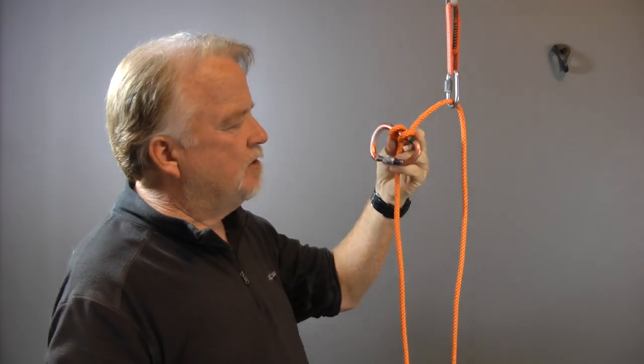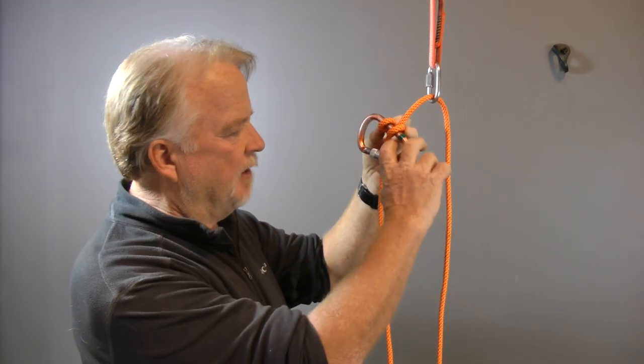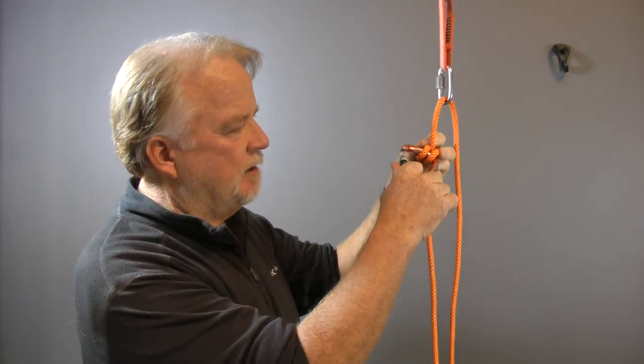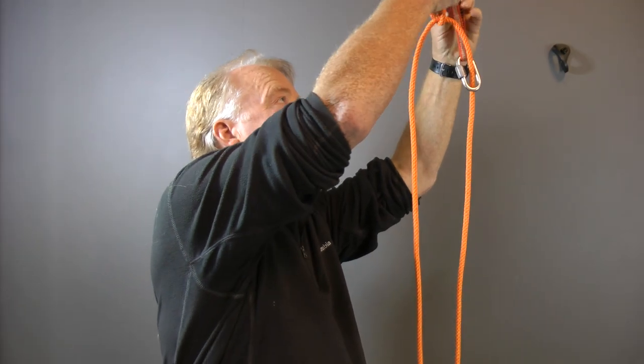Another simple twin rope system is what I call a clip block. To rig it, all I do is take the clove hitch off the spine of my carabiner and move it out to the wide end. Then take the carabiner and clip it up to the anchor.